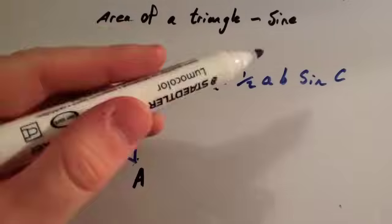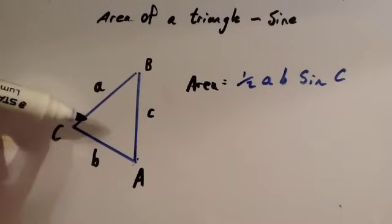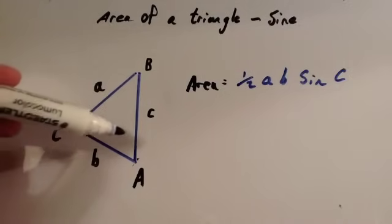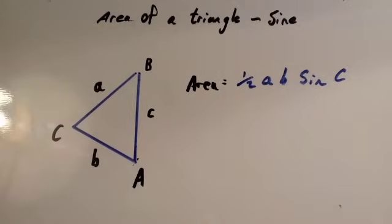So you just need, remember you're finding the area of a triangle using sine, you need two sides and the angle enclosed by those two sides. So it could be these two and the angle enclosed, it could be these two sides and the angle enclosed, or it could be these two sides and the angle enclosed. Let's look at an example.